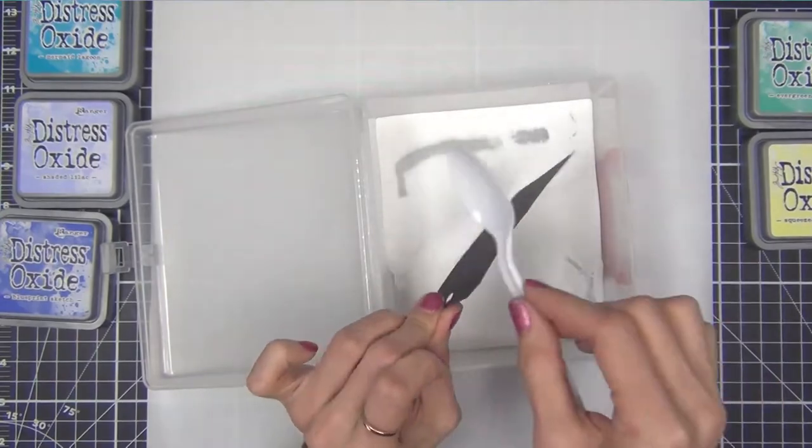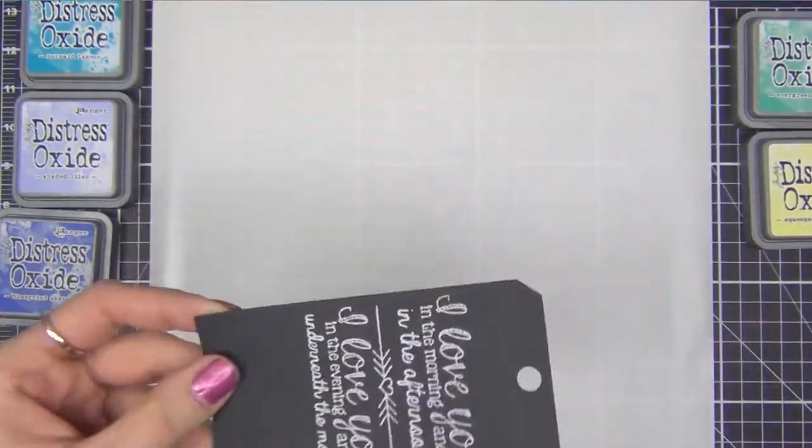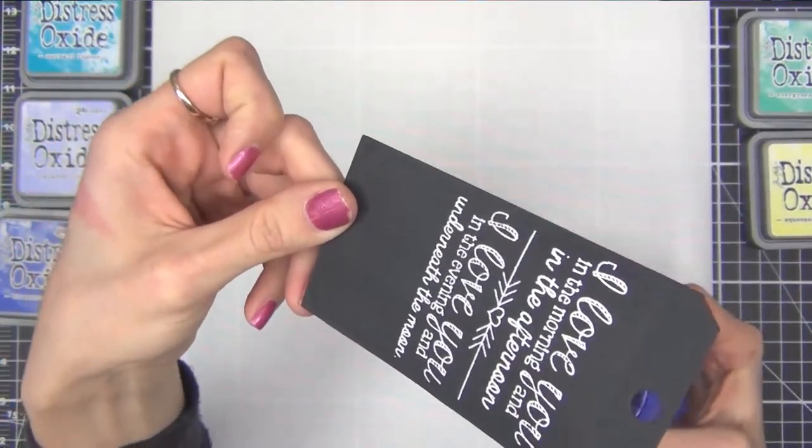I go ahead and stamp it with some VersaMark ink and white heat emboss it using Ranger's white embossing powder.